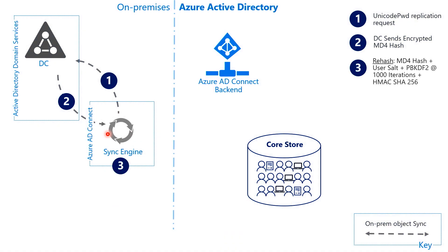In step three, AD stores the password hashes using MD4, a hashing function that has been around for a long time. The AD Connect agent rehashes this value with modern crypto. First, we take the 16-byte original value and adjust it so it's 64 bytes. Then the agent creates a random 10-byte salt for each AD hash and appends it to the original value. Salts make each value unique even if two users have the exact same password, helping defend against attacks such as rainbow tables. Finally, we hash the resulting value using a more robust hashing function called Password-Based Key Derivation Function 2, also known as PBKDF2, using 1,000 iterations of HMAC-SHA-256. All this process gives us a 32-byte value.